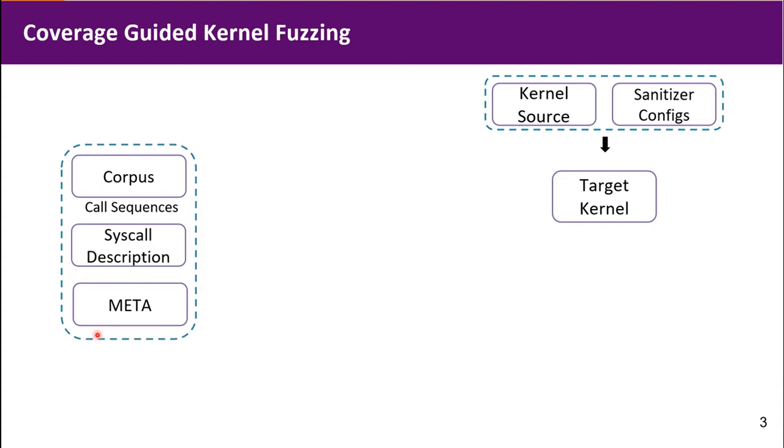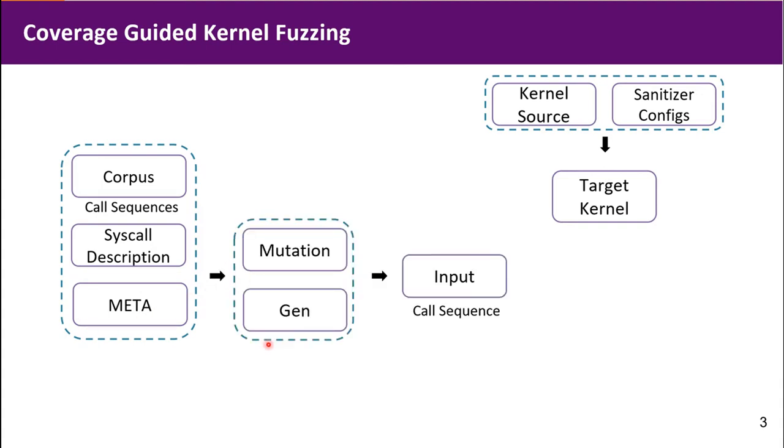We use Syslang description and some metadata as input to mutation and generation. Then we generate input, which is a call sequence, and feed the input to the executor. The executor issues syscalls.